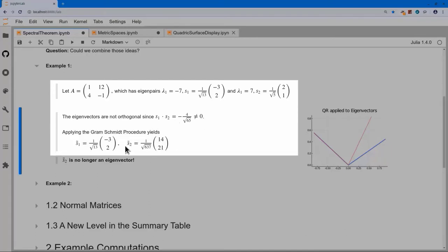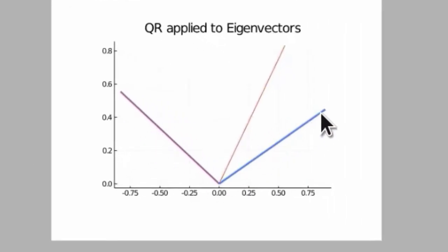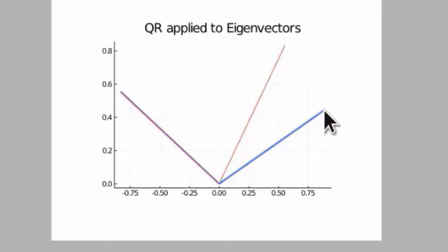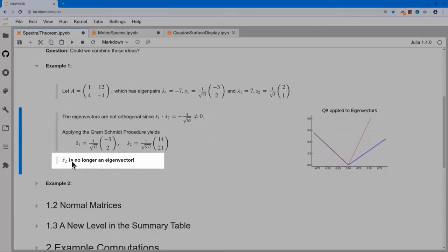If I try Gram-Schmidt on them, I find the first vector still lies along the original direction, but the second vector gets replaced by a new vector. I started with the red vectors s1 and s2, which are not orthogonal to each other. I replaced s2 by its orthogonal projection to get a right vector. But this new vector is no longer in the direction of either eigenvector — it's an entirely new direction. Applying A to this vector won't satisfy Ax = λx, so this new vector is no longer an eigenvector.